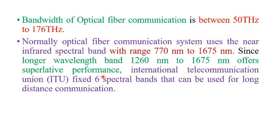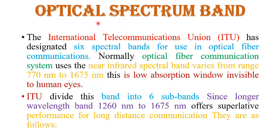In this band, the signal experiences less attenuation and distortion. The ITU — International Telecommunication Union — has fixed six spectral bands that can be used for long distance communication. Let's discuss those six spectral bands.